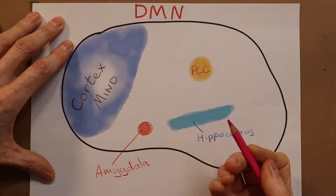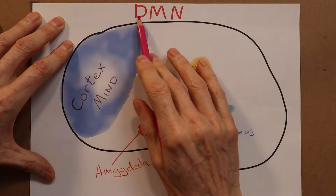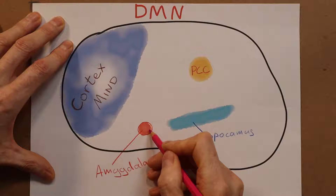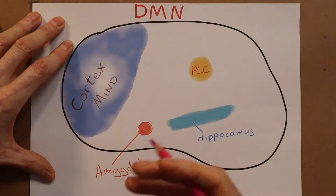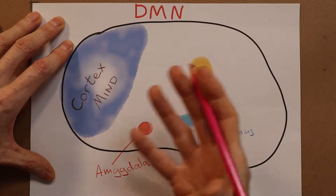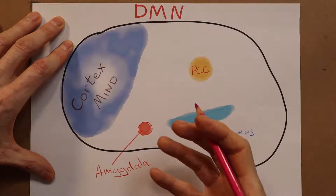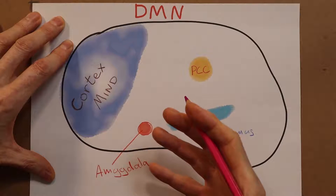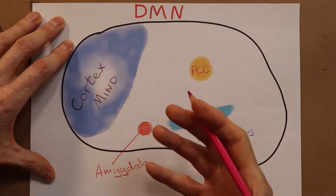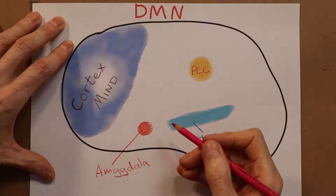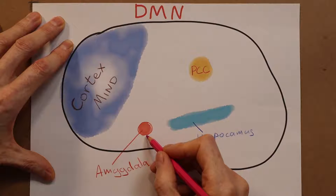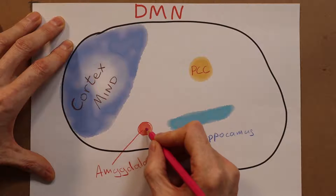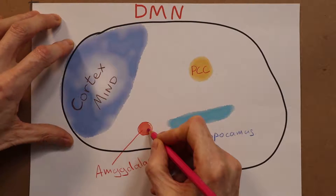The first primary component of the default mode network is the amygdala. The amygdala acts like a burglar alarm, scanning the environment for potential threats and danger. Brain scans have shown that in the anxious brain the amygdala may be physically enlarged and is certainly hyperactive.